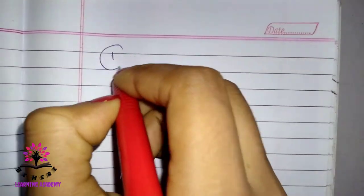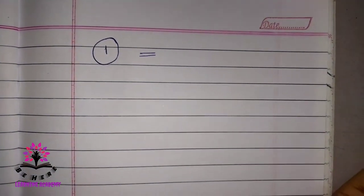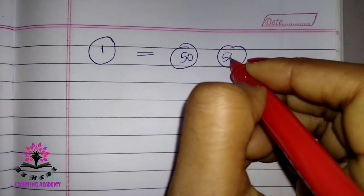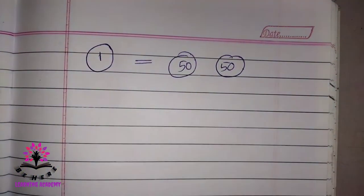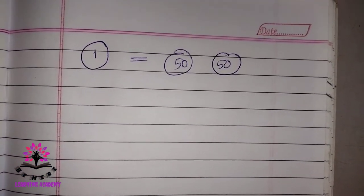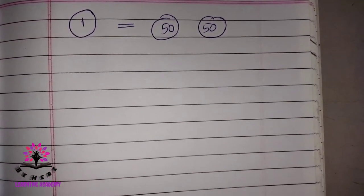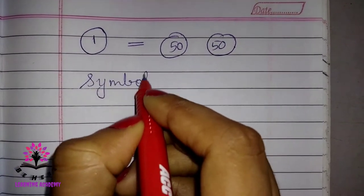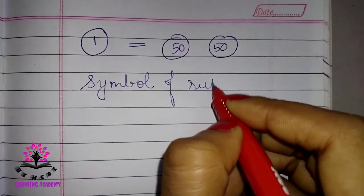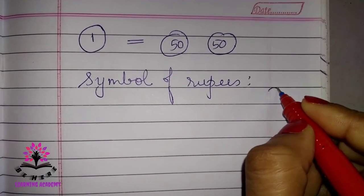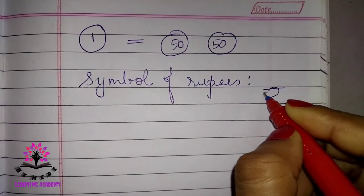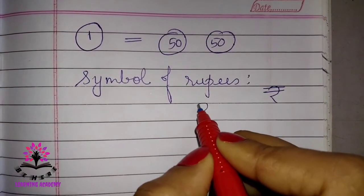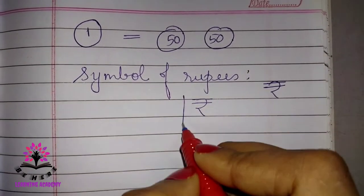If you have 1 rupee coin, it is equal to 2 coins of 50 paisa. Now, what is the symbol of rupees? The symbol of rupees is written like this — this is the symbol of rupees.